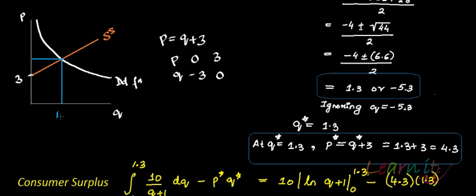The equilibrium quantity is 1.3 and the equilibrium price is 4.3. The consumer surplus is this entire area under the demand curve from 0 to 1.3 — the complete value the consumer gets from consuming 1.3 units — minus the area of the rectangle P*×Q*, which is what they actually pay.